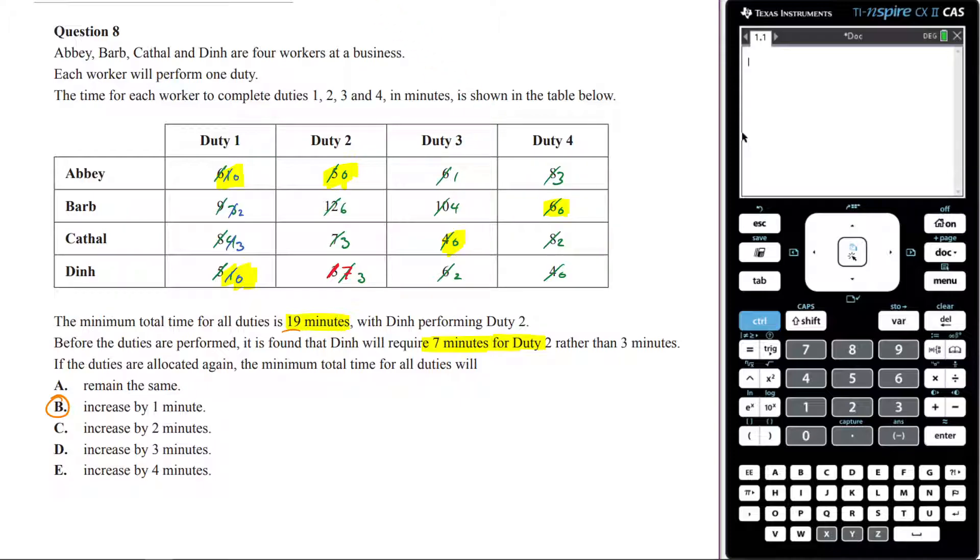Barb has to do that one because it's her only zero. Cathal has to do that one because it's their only zero. Dean has to do duty 1 because this is only zero. That means Abby has to do duty 2 because they can't do duty 1 because Dean's doing duty 1. Abby has to do duty 2.